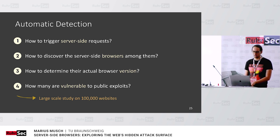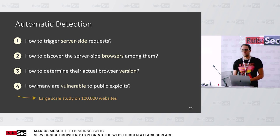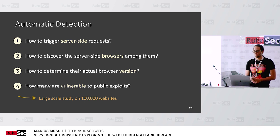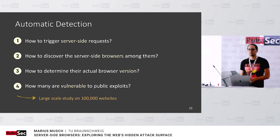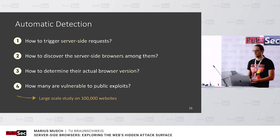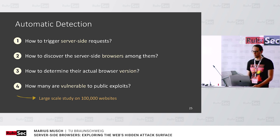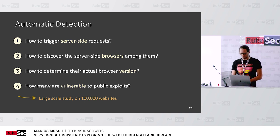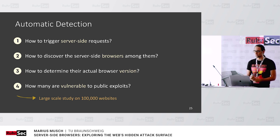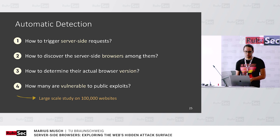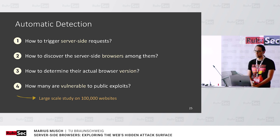The user agent alone is not enough since not everyone is honest in their user agents. For this, we looked at 100,000 websites — or at least tried to. Not all of them were online, but we used popular website ranking lists and went to the top 100,000 most popular websites to check if this is happening. We used headless Chrome — I'm aware of the irony of using Puppeteer to discover insecure Puppeteers. We also crawled deeper into websites, visiting around 50 subpages for each domain to discover more functionality.